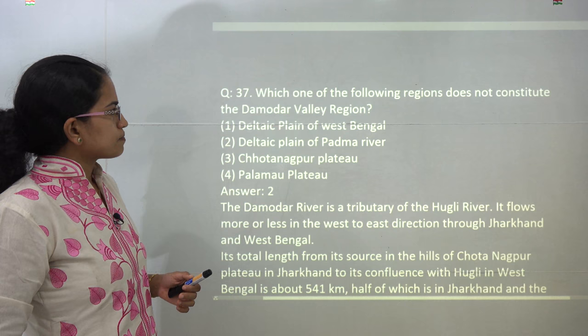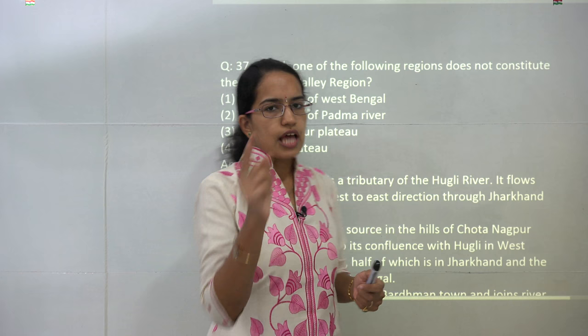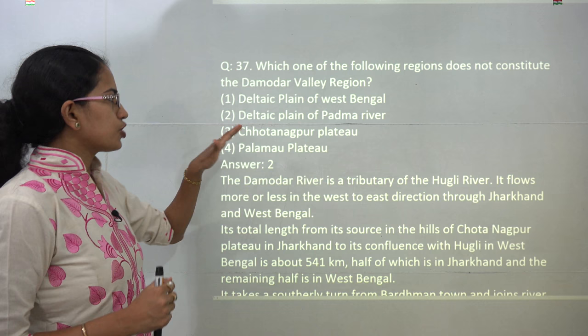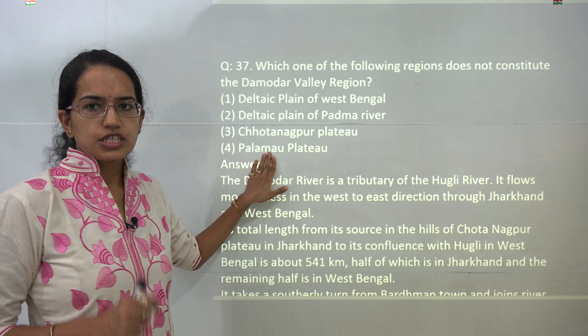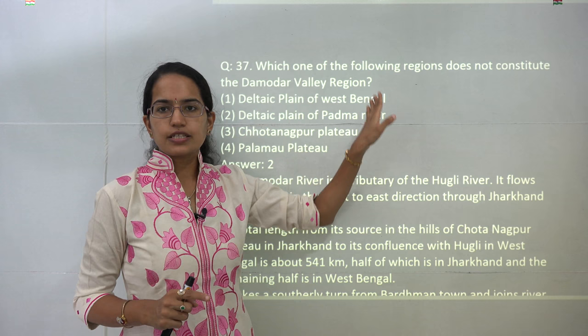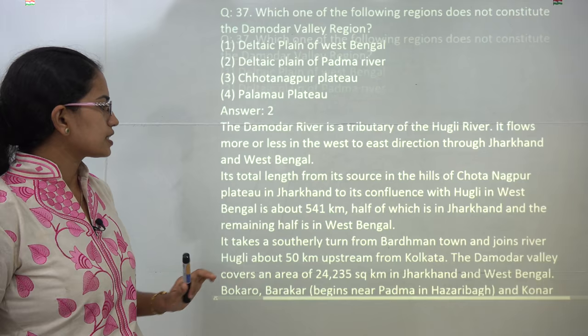The next question asks which region does not constitute the Damodar River Valley region. The Damodar catchment area includes major parts of Jharkhand and West Bengal. You have the deltaic plains of West Bengal, the Chhotanagpur plateau, and the Palamu plateau as part of the Damodar valley region. However, the plains of the Padma river do not form part of the Damodar valley. So 2 is the correct answer.